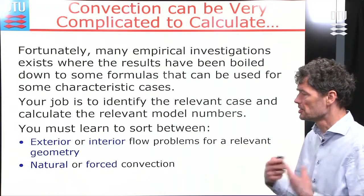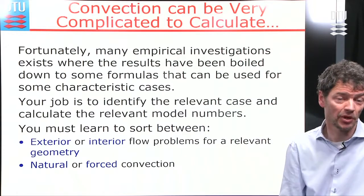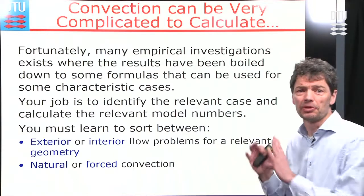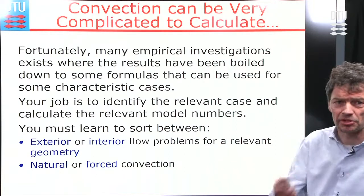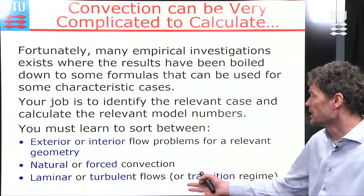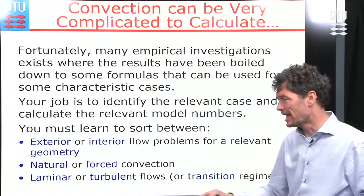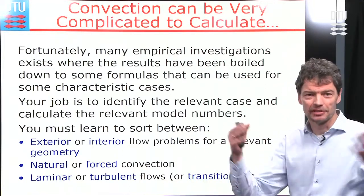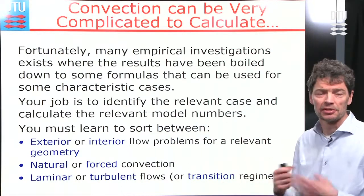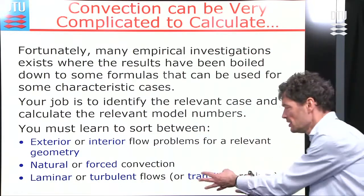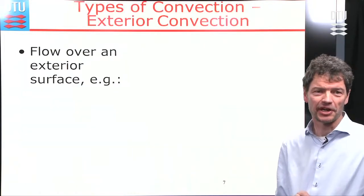The types of convection can either be natural — the temperature-driven ones — or forced, where exterior forces cause motion in the fluid. The types of flow can be laminar, or more vigorous and turbulent. We should also consider the transition regime which is somewhere in between, if we need to be very accurate.